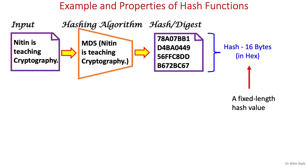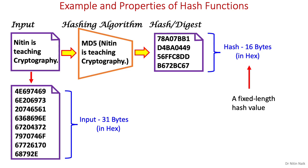Now let's compare the size of input and output in this hashing process. The input 'Nitin is teaching cryptography' is 31 characters. If I convert this input into hex using the standard ASCII code, it will be 31 bytes, which is greater than the 16-byte fixed-size hash value of MD5. This illustrates that the size of a hash value is typically shorter than the input, but the input could be of any length.